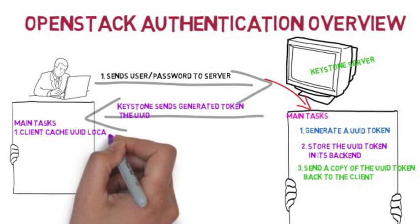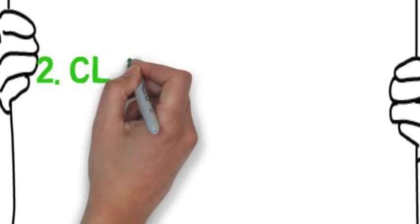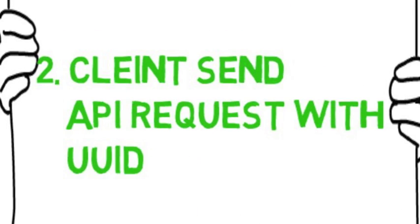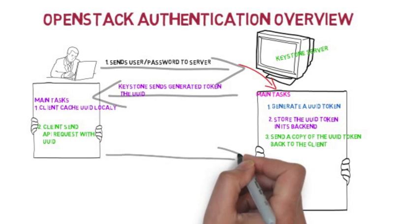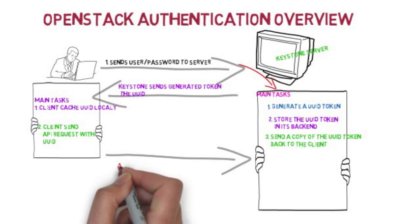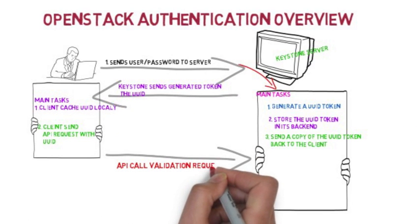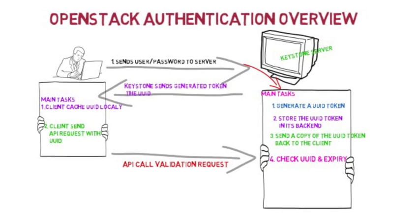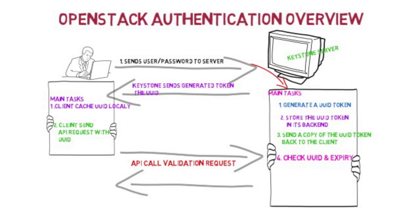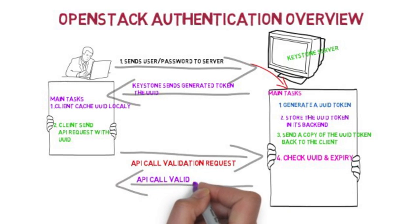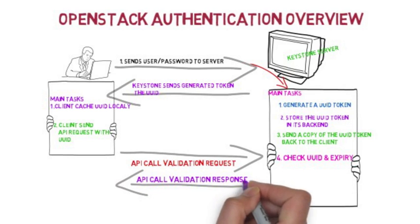The UUID will then be passed on each API request. The Keystone will validate the UUID and process the success or failure API response back to the client.